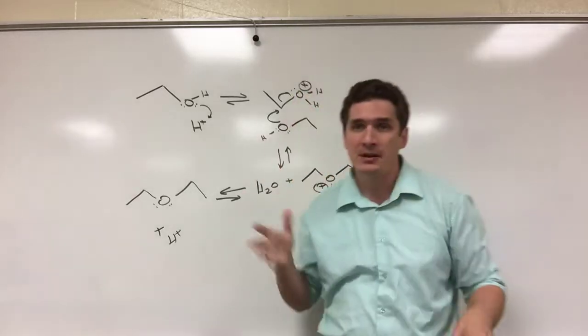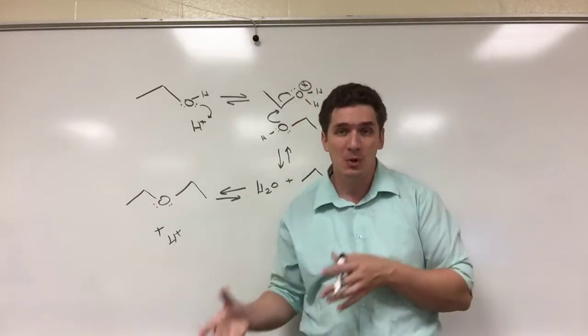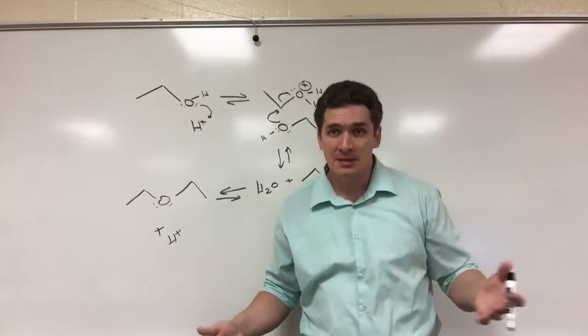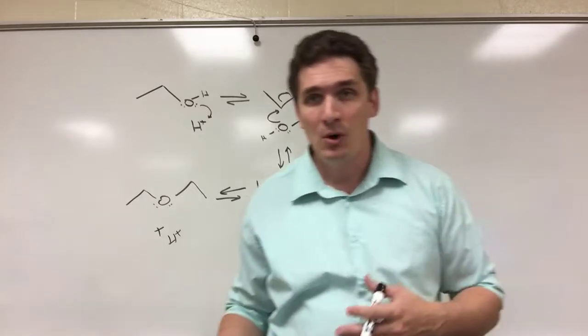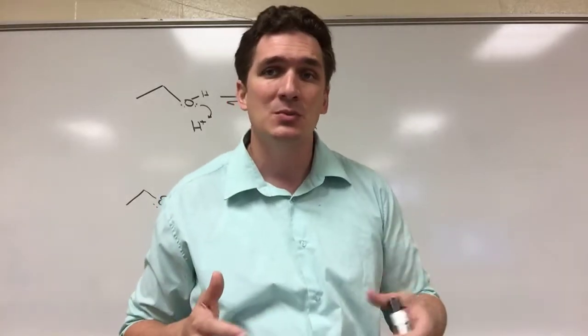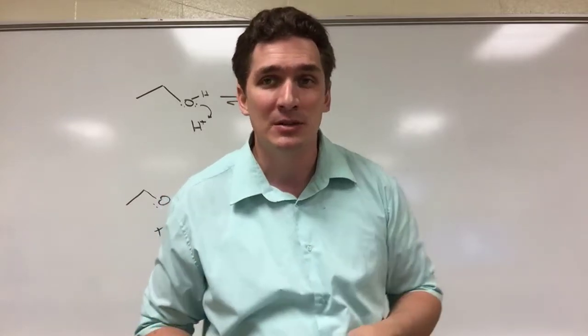And again, if we had a blend of alcohols—let's say we had ethyl alcohol and propyl alcohol—we're going to get all types of combinations: diethyl, dipropyl, and ethyl propyl. So this is really only reserved for when you want to make symmetric ethers.